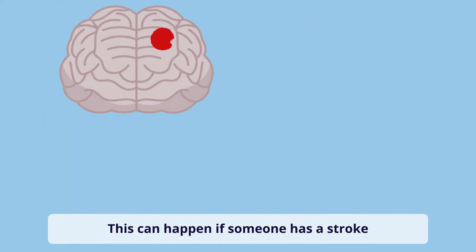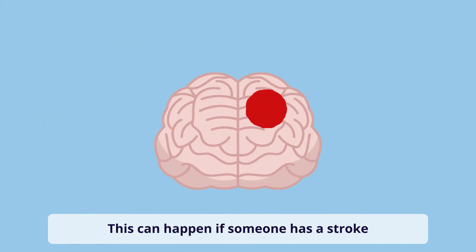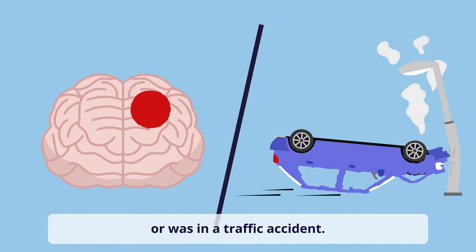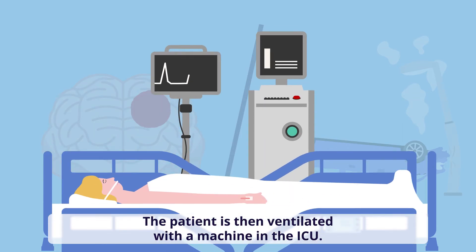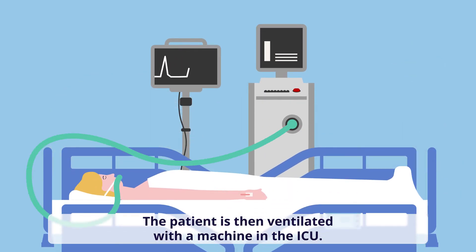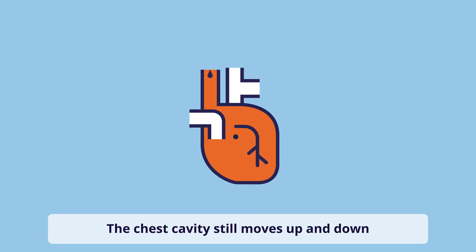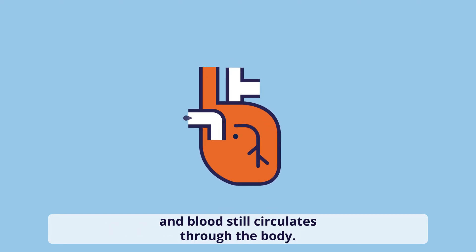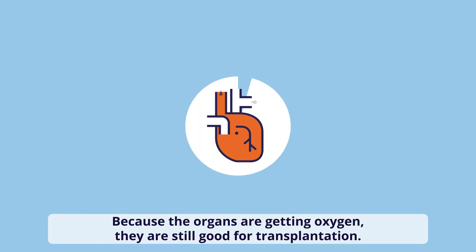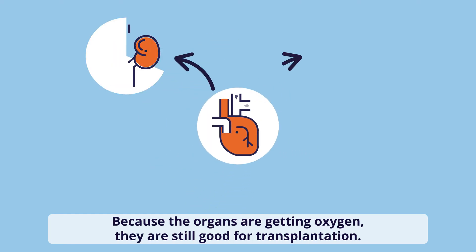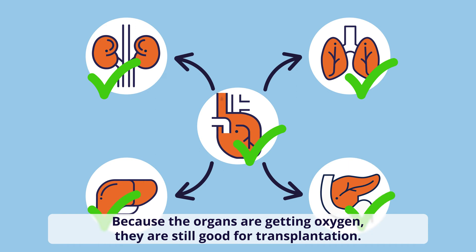This can happen if someone has a stroke or was in a traffic accident. The patient is then ventilated with a machine in the ICU. The oxygen keeps the heart beating. The chest cavity still moves up and down and blood still circulates through the body. Because the organs are getting oxygen, they are still good for transplantation.